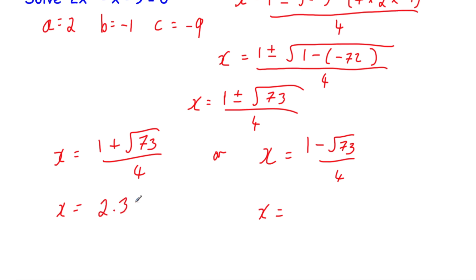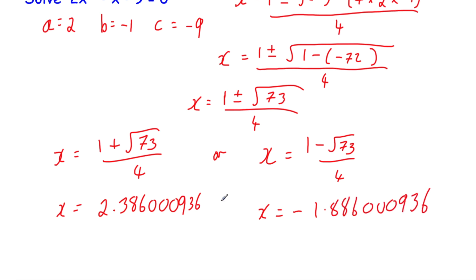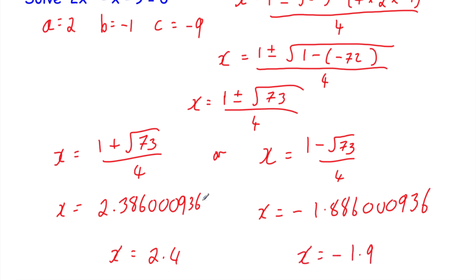x equals 2.386... or x equals negative 1.886... Normally in a question with the quadratic formula, it'll say give your answers to one decimal place or two decimal places. In this case I'm going to round to one decimal place. So there are two solutions: x equals 2.4 or x equals minus 1.9.